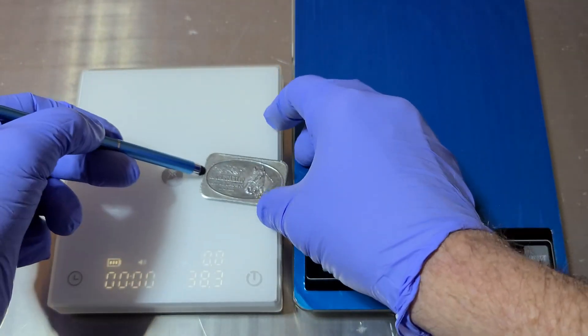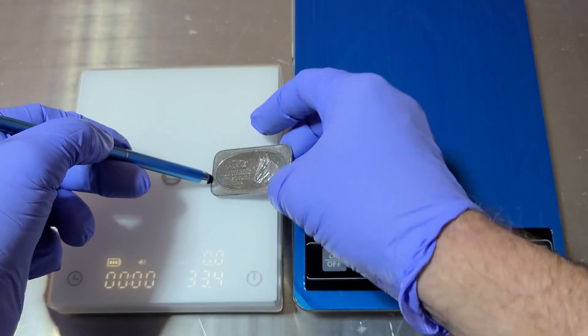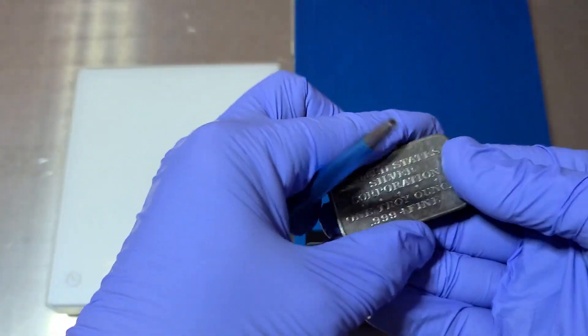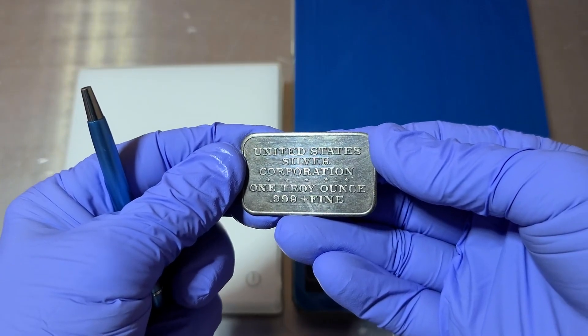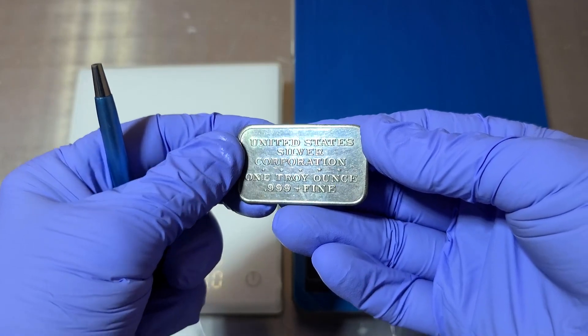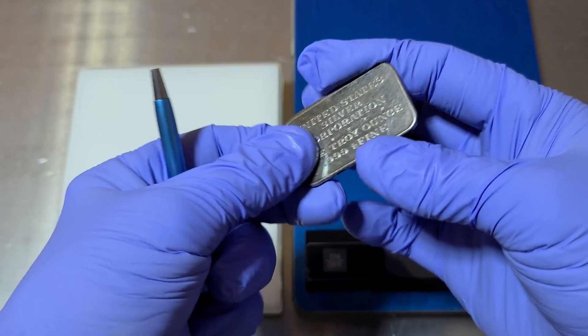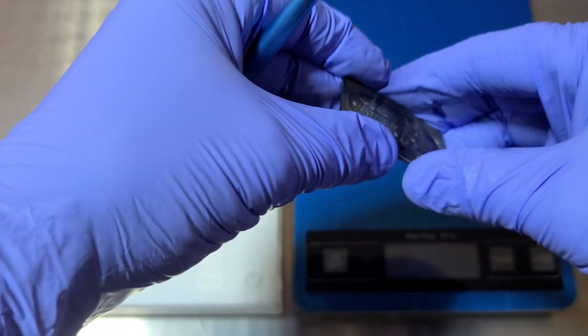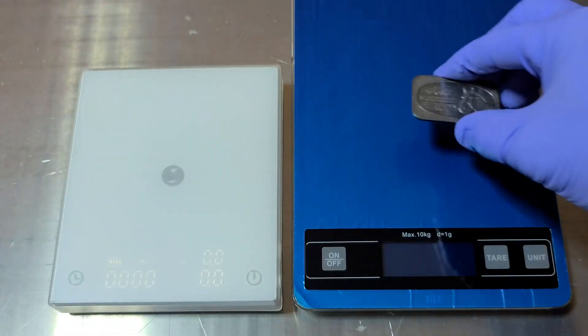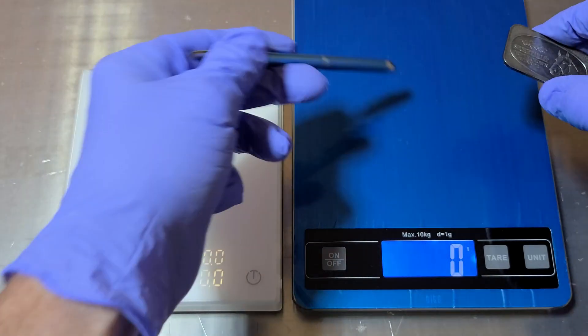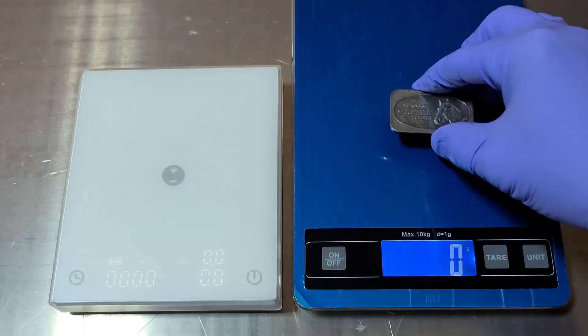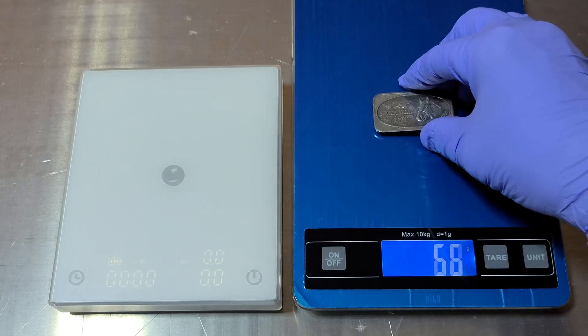And that opened a bucket of worms up for me, because this is one troy ounce. And one troy ounce is supposed to weigh 31.1 grams. So let's turn this on. This is running on the internal battery. This has a rechargeable battery in it.